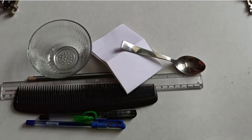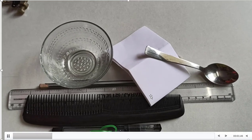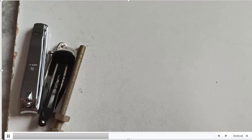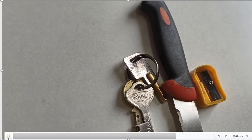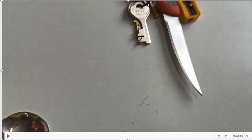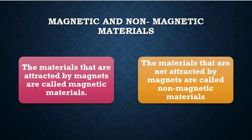Okay children, you have seen different kinds of materials. These are attracted by the magnet, and these are not attracted by the magnet. In some objects, some parts are attracted by the magnet and some parts are not. The materials that are attracted by magnets are called magnetic materials. The materials that are not attracted by magnets are called non-magnetic materials.